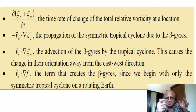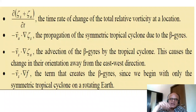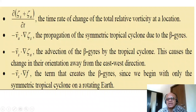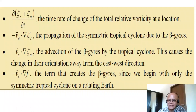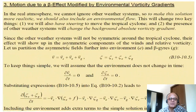This is a critical term: asymmetric vorticity generated by the beta gyres is advected by the tropical cyclone, generating asymmetry in the beta gyres themselves. Recall the previous figure showing anticyclones and cyclones as circular features — that will change here. The term minus V_s · grad(f) is what creates the beta gyres initially, since we begin with only a symmetric tropical cyclone on a rotating earth. Make sure to go through each term and understand its interpretation.